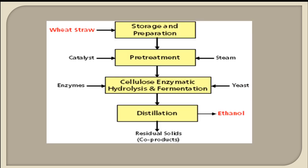In this diagram, wheat straw is used as the raw material feedstock. The wheat straw is stored, then prepared by cutting and drying. A catalyst is used in the pre-treatment, then steam is applied for sufficient moisture content. Fermentation then takes place in the presence of yeast and enzymes, since wheat straw is cellulose — enzymatic hydrolysis and fermentation occur with enzymes, yeast, and catalyst.